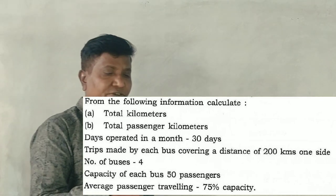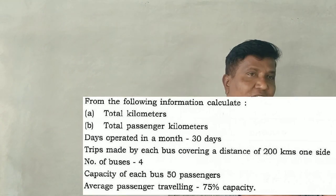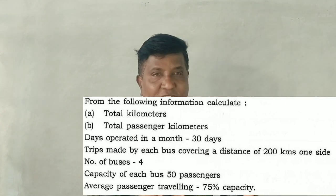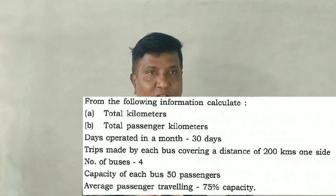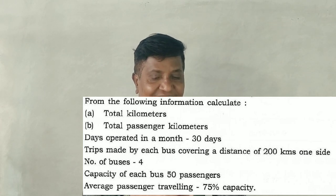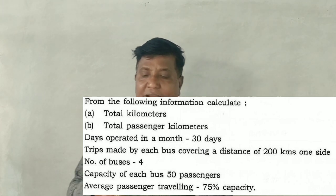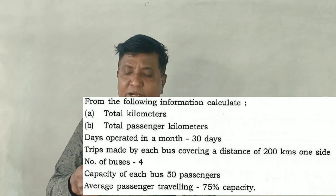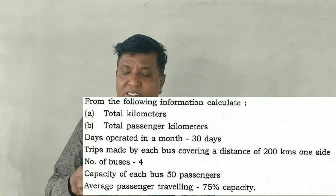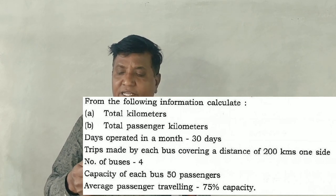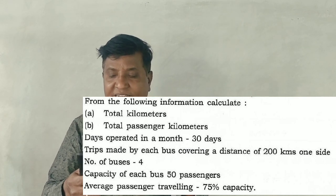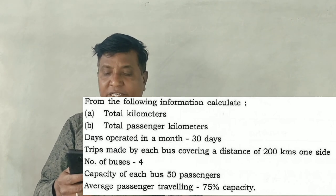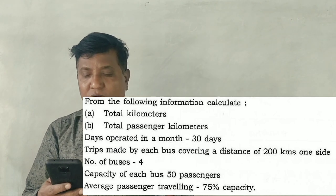From the following information, calculate total kilometers. Days operated in a month is 30 days. Trips made by each bus covering a distance of 200 kilometers one side — so one side is 200 kilometers.